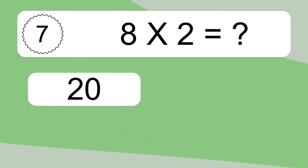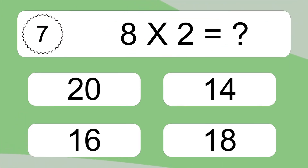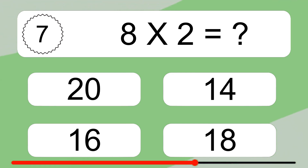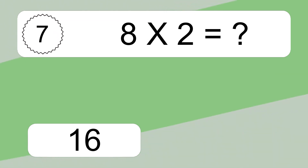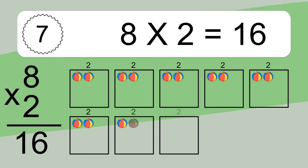8 times 2 equals what? 8 times 2 equals 16.